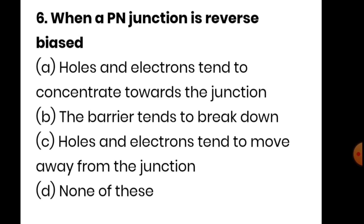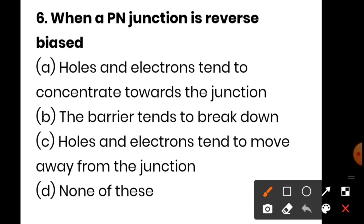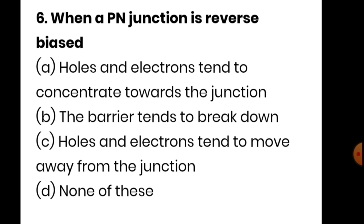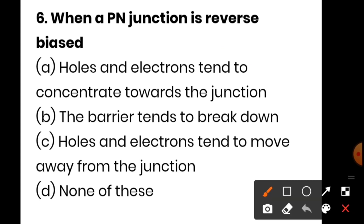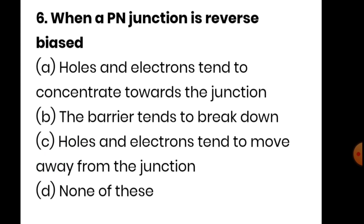Next question: when a PN junction is reverse biased, what happens? Option A — holes and electrons tend to concentrate towards the junction. Option B — the barrier tends to break. Option C — electrons and holes tend to move away from the junction. Option D — none of these. The correct answer is option C. When the PN junction is reverse biased, holes and electrons move away from the junction, which means the depletion layer increases.